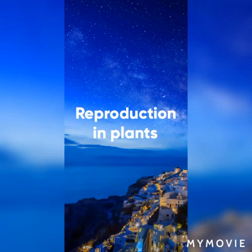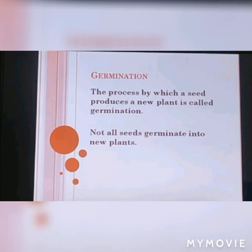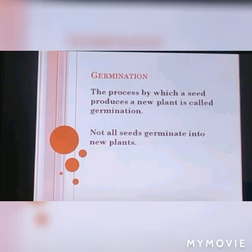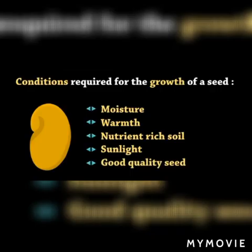Before moving on to the new topic, let's have a quick revision of the previous lecture, which was germination. The process by which a seed produces a new plant is called germination. Not all seeds germinate into new plants because each seed requires certain conditions: moisture, warmth, nutrient-rich soil, sunlight, and good quality seed.